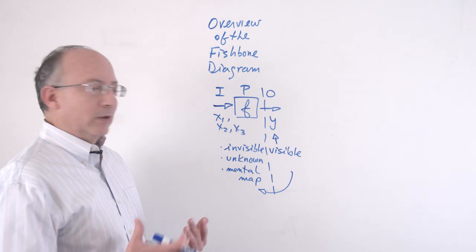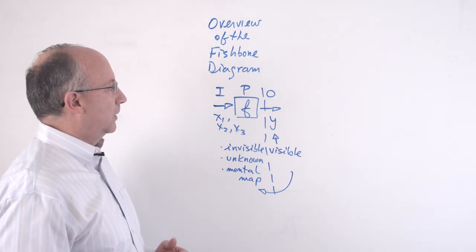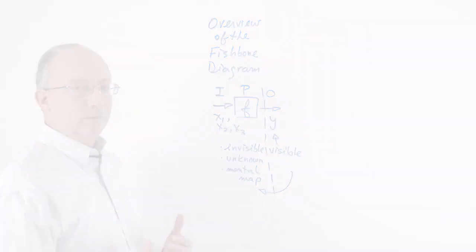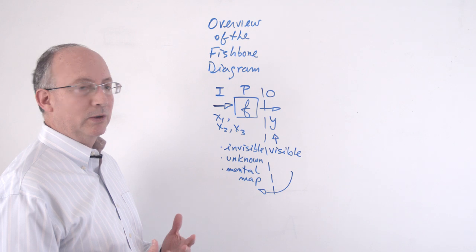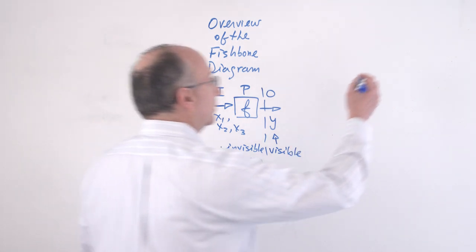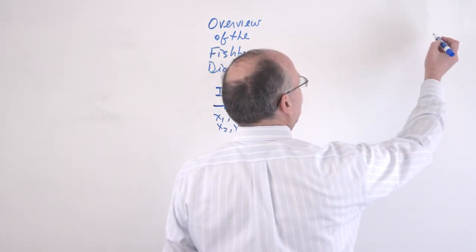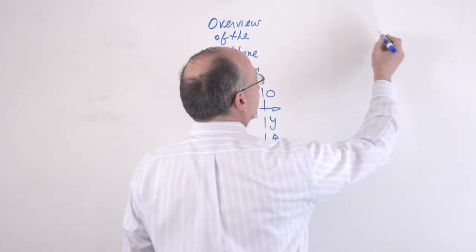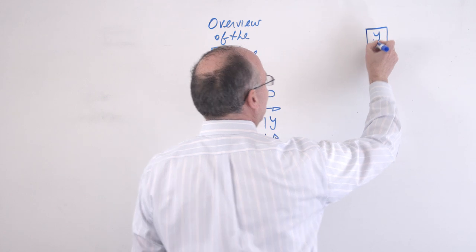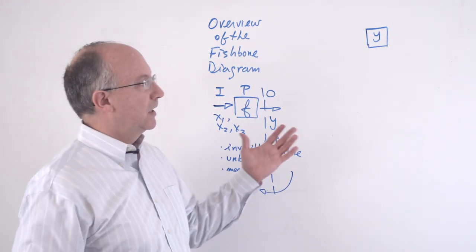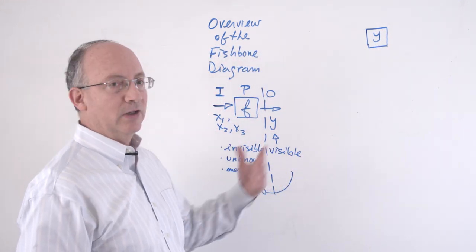And so the root cause tool or the Fishbone diagram allows us to do this. And the way to do it is as follows. You would indicate over here a system of causes, or rather you would indicate over here a system of causes, but beginning with that that can be seen, so the effect.